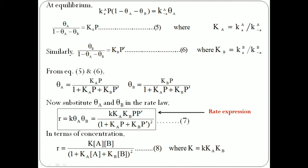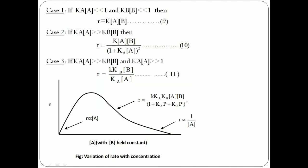This rate expression can also be written in terms of concentration. From the rate expression, we get three special cases. In case 1, when both reactants A and B adsorb weakly, the rate of the reaction is first order with respect to A and first order with respect to B. In case 2, if reactant A adsorbs more strongly than B, the rate of the reaction is first order with respect to B, the weakly adsorbed component. In case 3, if one reactant is more strongly adsorbed than the other — let us consider A is the more strongly adsorbed component — then the rate of the reaction is inversely proportional to A. In the rate versus concentration graph, the rate first increases at lower concentration, passes through a maximum, and at higher concentration the rate decreases. This decrease occurs because one reactant can displace the other at higher concentration, and the maximum corresponds to the maximum number of AB pairs on the surface.